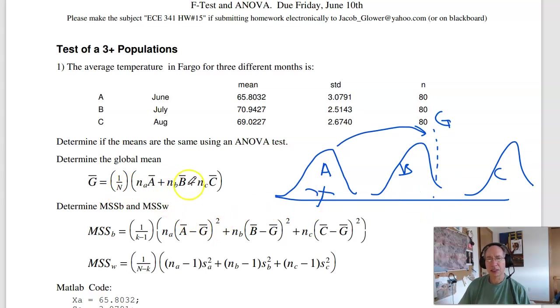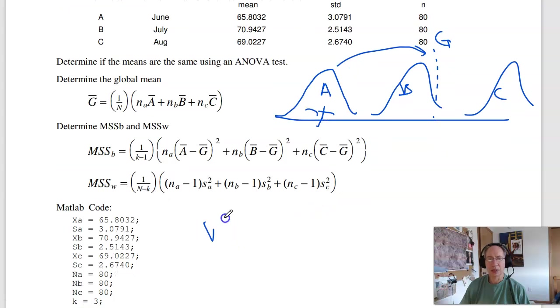To do that, I have to calculate the global mean, the variance between the global mean, the variance within each population, and take the ratio. That's your F-score. The F-score is your MSSB over MSSW.